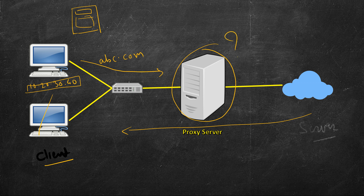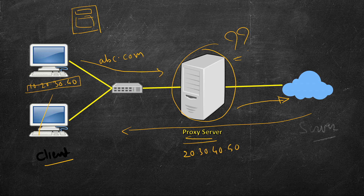So why do we need a proxy server and what purpose does it solve? There are many advantages. One is privacy. This client machine has IP address 10.20.30.40, and the proxy server will have another IP address, let's say 20.30.40.50. The request will be routed through this proxy server to the original server, so the request will appear as if it was sent from the proxy machine, and the identity of the client is preserved.